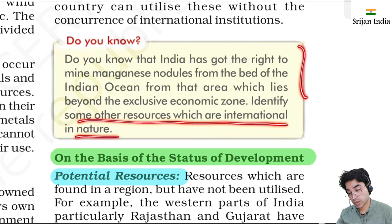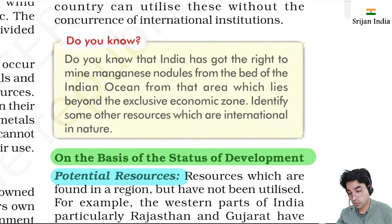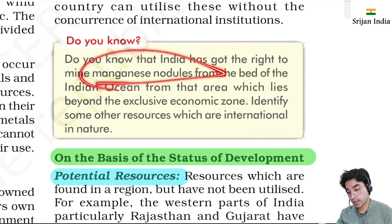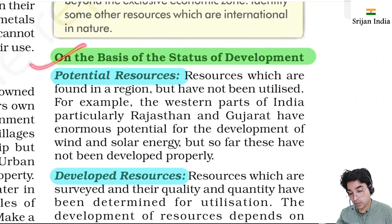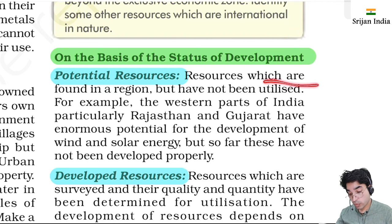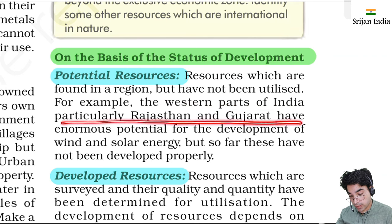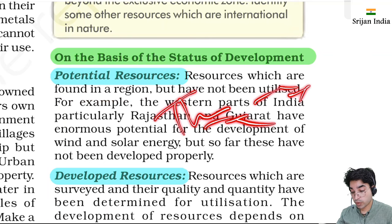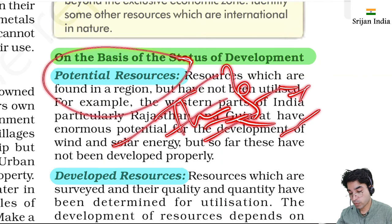India has the right to mine manganese nodules from the bed of the Indian Ocean from that area beyond the exclusive economic zone. Manganese nodules contain many minerals and metals found on the seabed. On the basis of status of development: potential resources are found in a region but have not been utilized. Western India - particularly Rajasthan and Gujarat - has enormous potential for wind and solar energy, but it has not been properly tapped yet. India has a lot of thorium but we are not utilizing it fully - so that is potential resources.